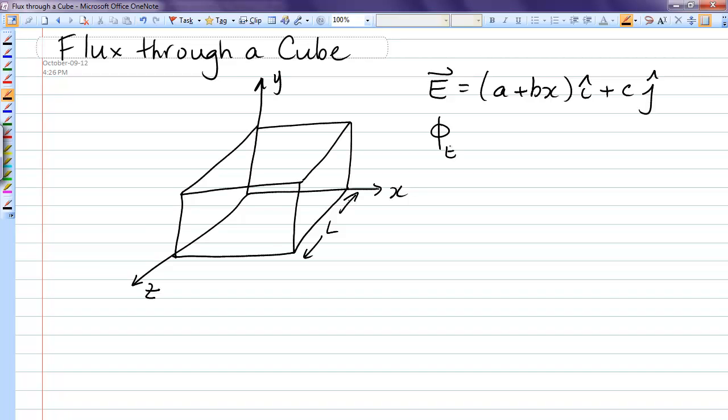The definition of electric flux is the integral of E dot dA. The dot product is very important. Now remember when you're dotting vectors, the only time that you pick up a term is if you're dotting like components. So the dot product of all like components is 1. The dot product of all unlike components is 0.